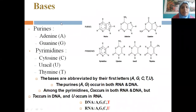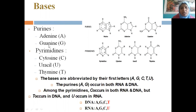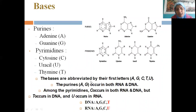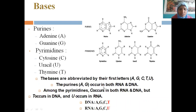We have purines and pyrimidines as nitrogen bases. Adenine and guanine are purines; cytosine, uracil, and thymine are pyrimidines. Nitrogen bases are abbreviated by their first letter: A for adenine, G for guanine, C for cytosine, U for uracil, and T for thymine. Purines A and G occur in both RNA and DNA. Among pyrimidines, thymine is seen in DNA and uracil is seen in RNA.